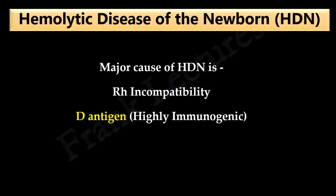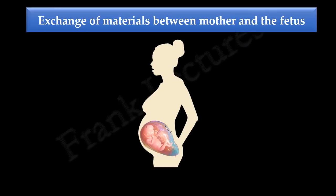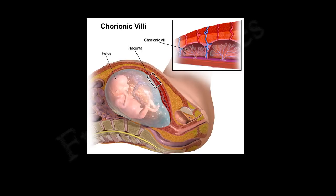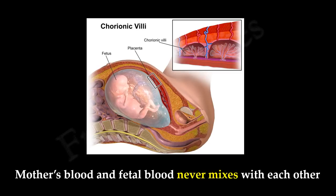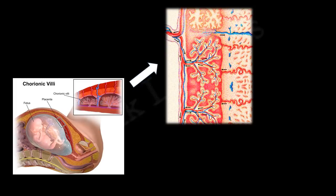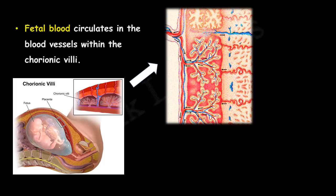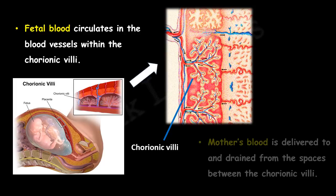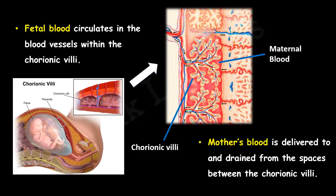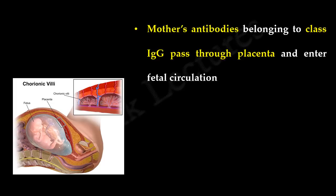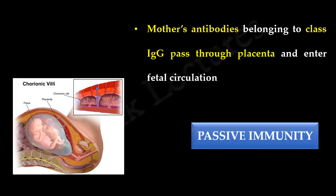To understand how hemolytic disease of the newborn is caused, we need to understand the exchange of materials between mother and fetus. Mother's blood and fetal blood never mix with each other. Fetal blood circulates in the blood vessels within the chorionic villi, while mother's blood is delivered to and drained from the spaces between the chorionic villi, so fetal circulation is well separated from the mother's circulation. During pregnancy, some of the mother's antibodies belonging to the immunoglobulin G class pass through the placenta and enter fetal circulation, enabling the mother to transfer her immunity to the fetus.